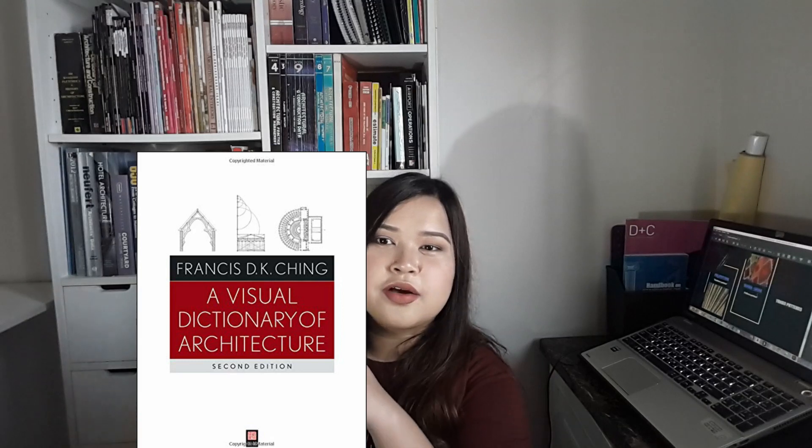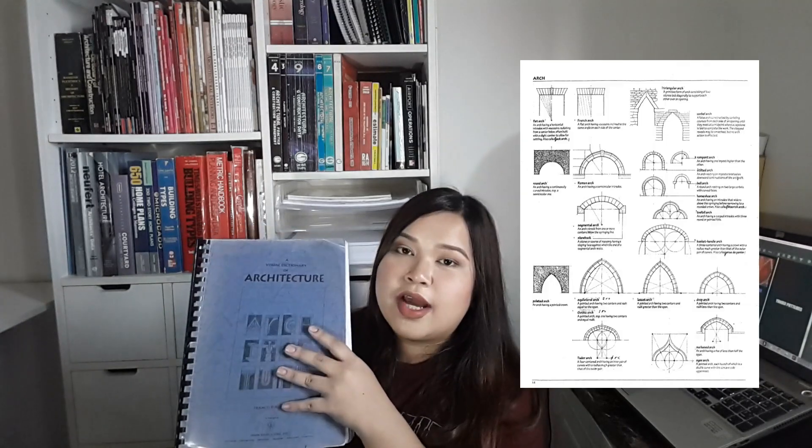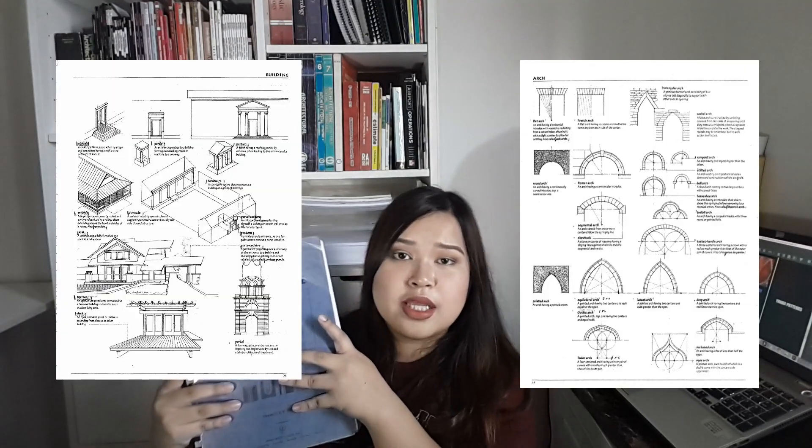So one of the questions is: do you really need to study the Visual Dictionary of Architecture by DK Ching? I know it's just a photocopy, but this is actually owned by my dad — he also used it in his review. They said that the Visual Dictionary will help you in the review, and actually, it's true. This is one of the perfect materials that you can really review. It's very understandable — the terms and illustrations.